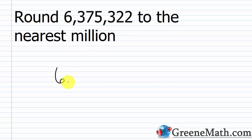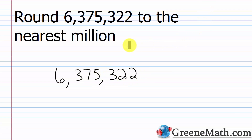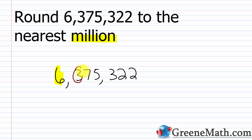So let's rewrite this number: 6,375,322. We're looking for the millions place — we're rounding to the nearest million. That's going to be this 6 right here. And then we're looking at the digit immediately to the right of that, and that's this 3 here.